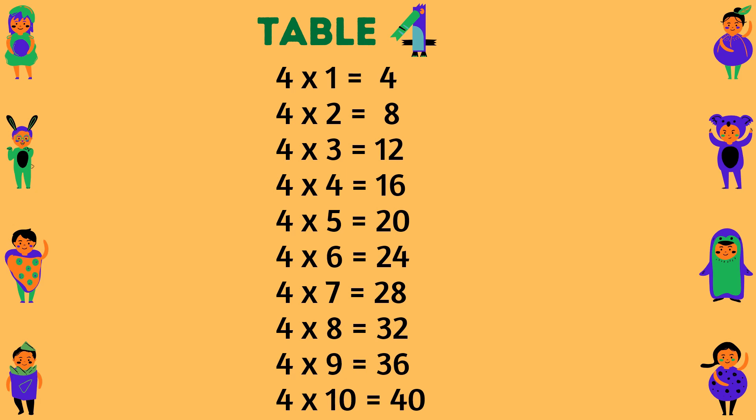Table of 4. 4 times 1 equals 4. 4 times 2 equals 8. 4 times 3 equals 12. 4 times 4 equals 16. 4 times 5 equals 20. 4 times 6 equals 24. 4 times 7 equals 28. 4 times 8 equals 32. 4 times 9 equals 36. 4 times 10 equals 40.